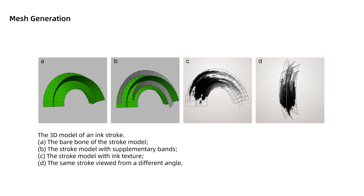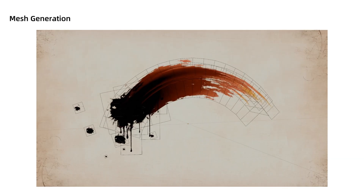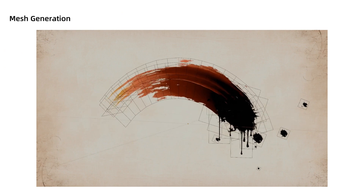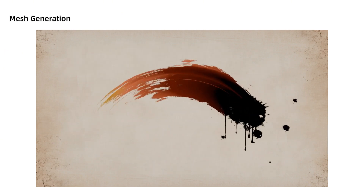Next, let's explore how Inkbrush works, focusing on representing ink strokes in 3D and creating ink meshes and textures. We use two perpendicular flat band meshes to simulate the strokes, simplifying the model while ensuring it can be viewed from various angles. This method enhances efficiency and supports real-time rendering. To accurately depict the textured ends of strokes, we add extra bands parallel to the main ones, improving visuals without adding much complexity.